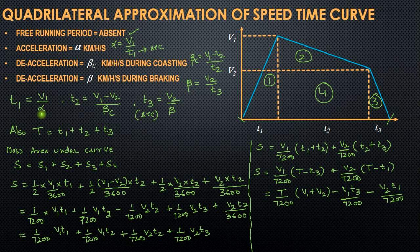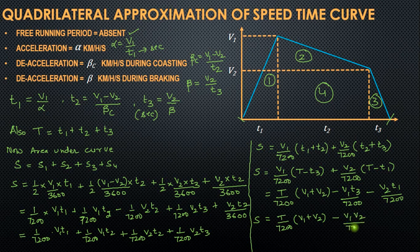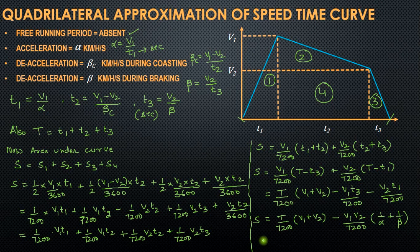We also know that T1 = V1/α and T3 = V2/β. Substituting these values, we get: S = T/7200 · (V1 + V2) − V1·V2/7200 · (1/α + 1/β). This is the required expression for the distance travelled by the train in time interval T, when the maximum speed V1, the braking application speed V2, the acceleration constant α, and the retardation β are known.